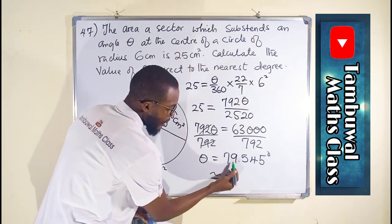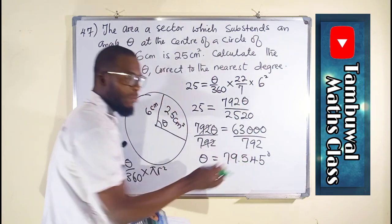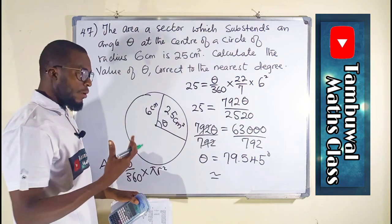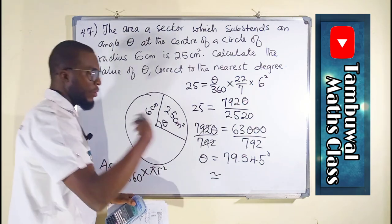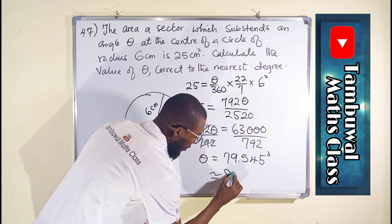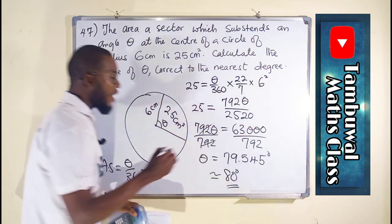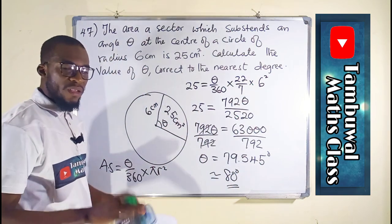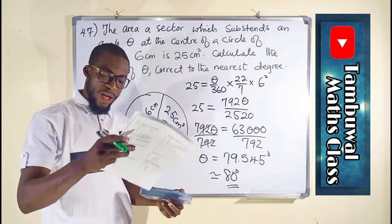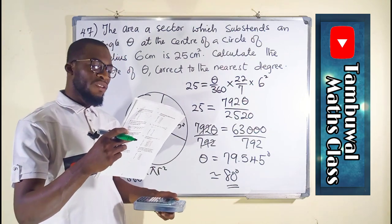So this is approximately equal to 79. We have 79 but the next number is up to 5. Therefore we round it up to 80 degrees. So the angle subtended by this sector is 80 degrees approximately which we have here as option C.